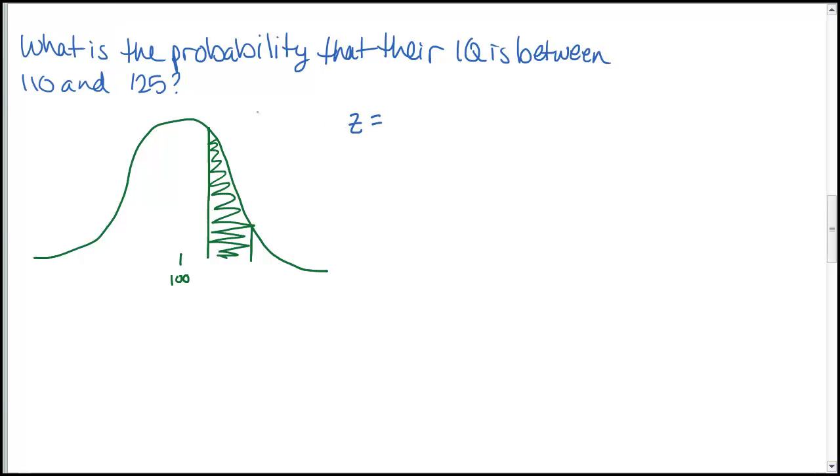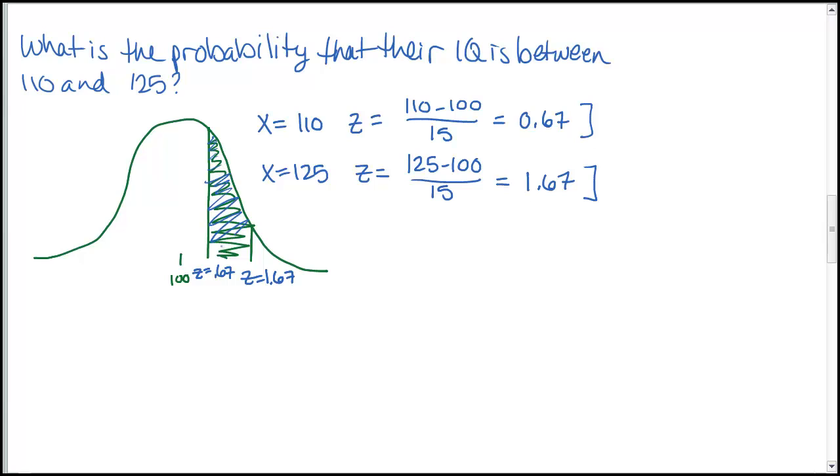So again, I'm going to draw a little picture. The middle is 100 because that was our mean. So 110 is a little above that. 125 would be a little above that. So now we're looking for a probability or a percentage in between these two values. We of course have to compute the z-scores for both of these. So for 110 and for 125. I'm rounding both of these z-scores to two decimal places because that's all we have in the table.